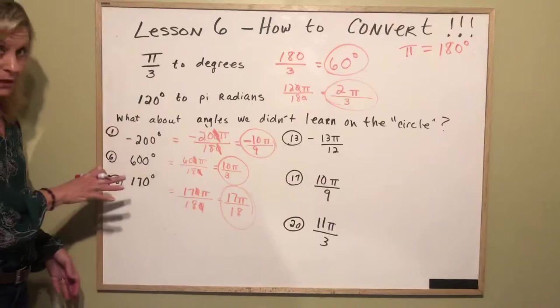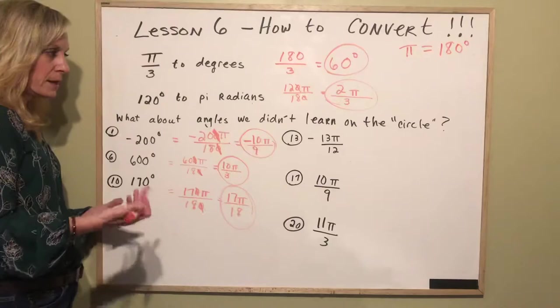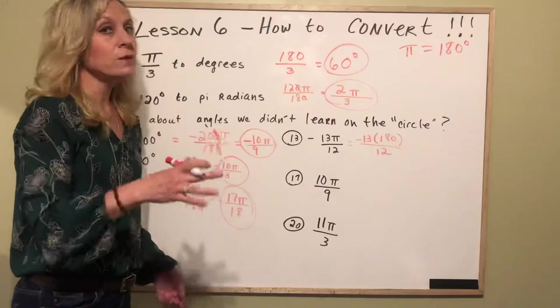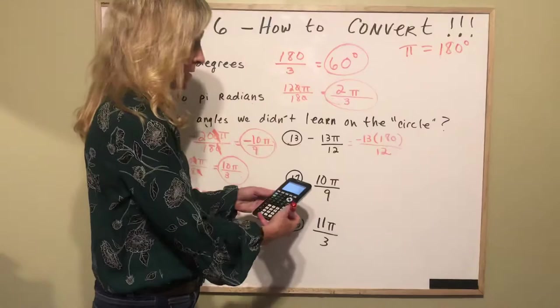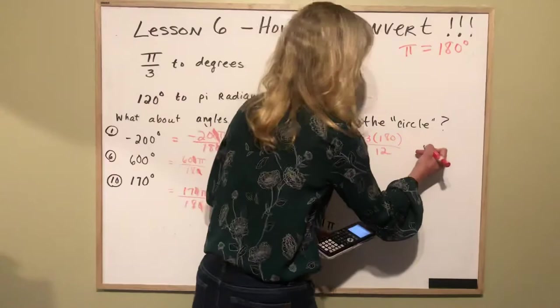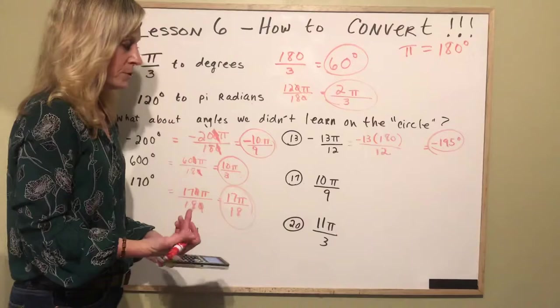The second half of the worksheet we're going from pi to degrees so you're just going to substitute 180 in for pi. So 13 you would go negative 13 and then this is 180. There you go. So if you want to you could do all of this on the calculator. You get out your calculator and go 13 times 180 divide that by 12 and you get 195, there's a negative in the answer. Negative 195 degrees. You could have reduced and multiplied that would have been fine too however you want to do it.